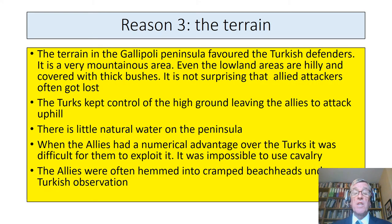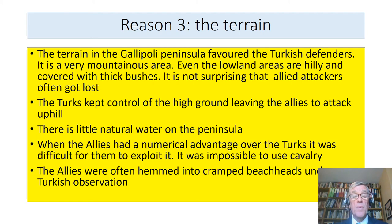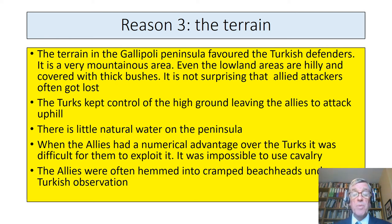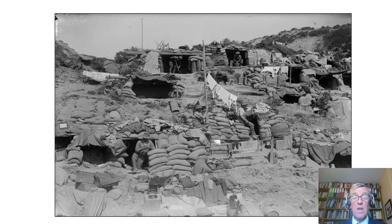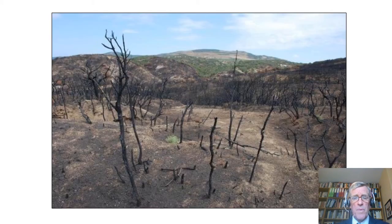Reason three: the terrain. The land in the Gallipoli Peninsula favoured the Turkish defenders. It's a very mountainous area — even the lowland areas are hilly and covered with thick bushes, so it's not surprising the Allied attackers often got lost. The Turks always seemed to be in control of the high ground, leaving the Allies to attack uphill. There was little natural water on the peninsula. Because of the hills and mountains, it was impossible to use cavalry. The Allies were often hemmed into cramped beaches under Turkish observation. There's a picture of some of the terrain — the famous battlefield of Scimitar Hill, some of it now affected by modern-day bushfire.